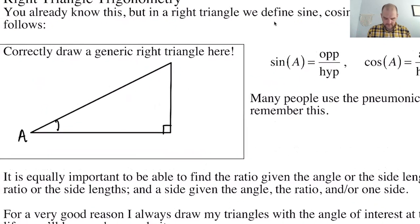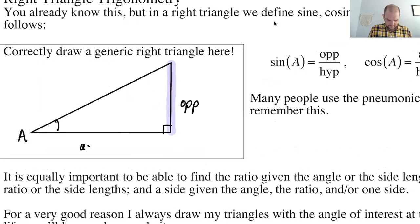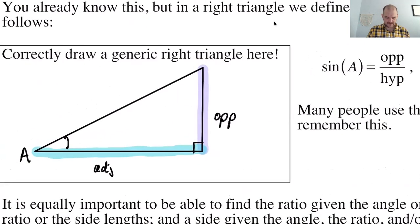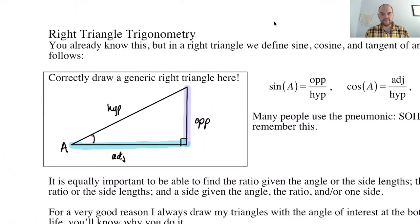Relative to angle A, one side is going to be opposite, one side is going to be adjacent, and then no matter what angle you're looking at, the side opposite the 90-degree angle is the hypotenuse. So we have angle A, an opposite side, an adjacent side, and a hypotenuse.